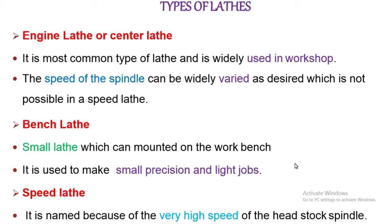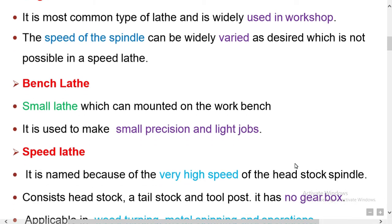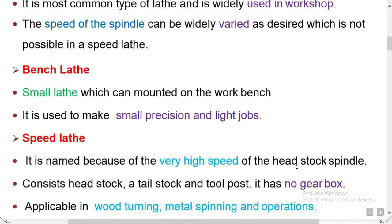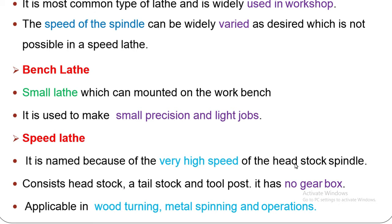Next we discuss speed lathe. The name itself indicates it operates at very high speed — that is why it is called speed lathe. It consists of headstock, tailstock, and tool post, but it has no gearbox, carriage, or lead screw. The tool is mounted on an adjustable tool post and feed is given purely by hand control. It has high spindle speeds which usually range from 1200 to 3600 RPM.